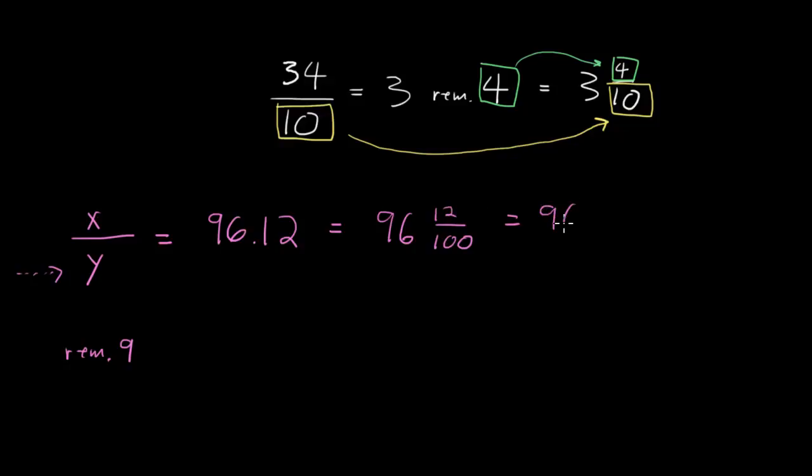And if I do that, I get 96 and 12 divided by 4 is 3. 100 divided by 4 is 25. So 96 and 3 twenty-fifths.